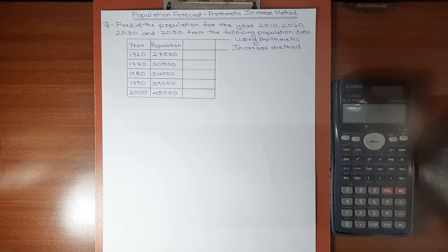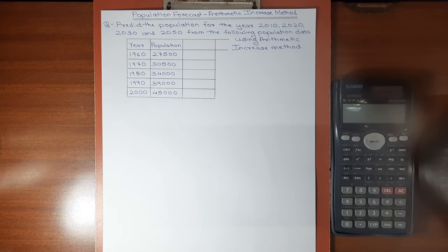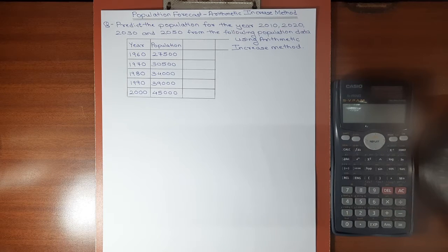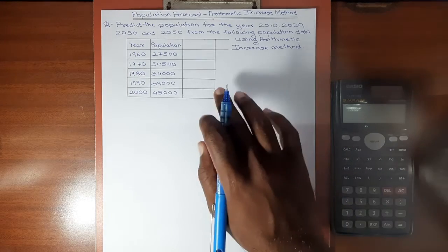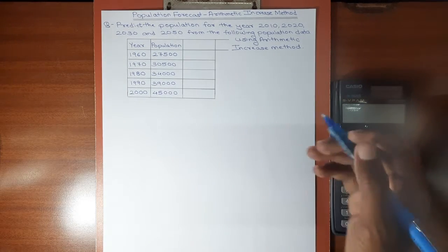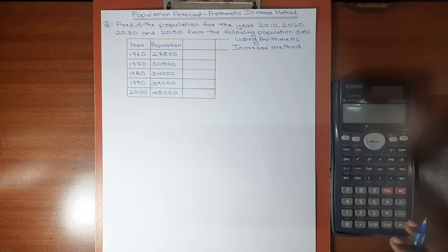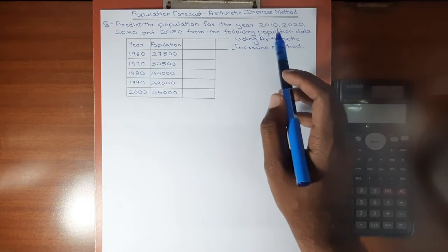There are various methods of population forecasting like arithmetic increase method, geometric increase method, incremental increase method, decrease rate of growth method, etc. Each method yields different values. I will be explaining all the methods and solving the same numerical by various methods in my upcoming videos. In this video we are going to see the arithmetic increase method.